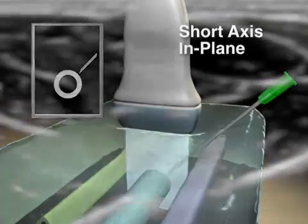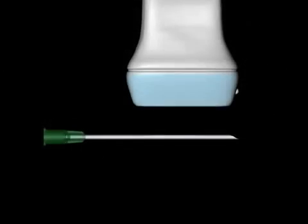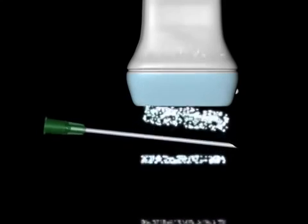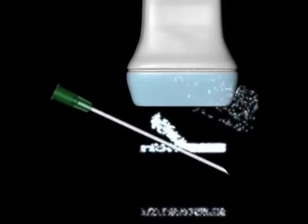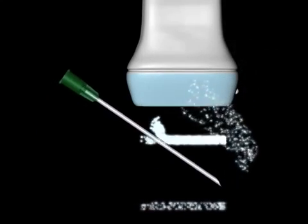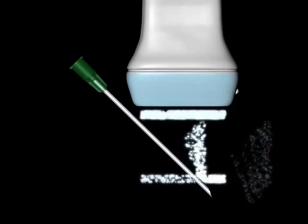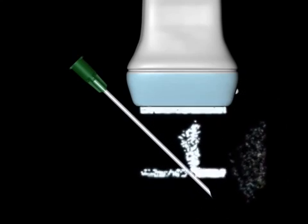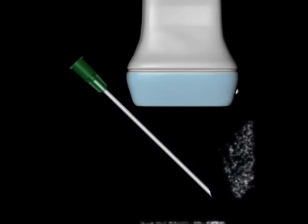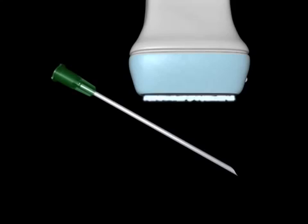Now let's move on to show some of the common challenges with visualizing the block needle sonographically. Block needles are specular reflectors, meaning they reflect sound back to the receiver over a narrow angle. As the angle between the transducer and needle increases, less sound is reflected back to the receiver and the signal becomes weaker.